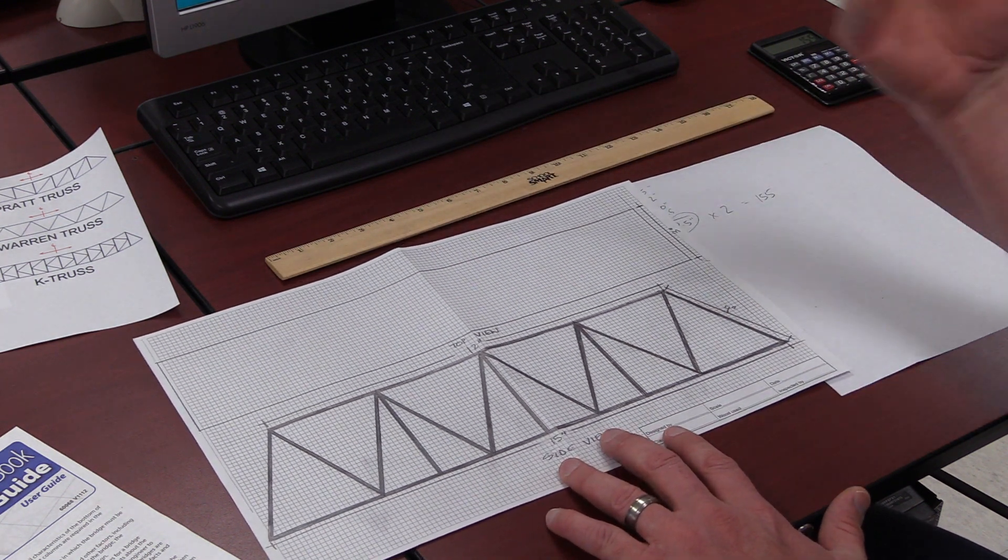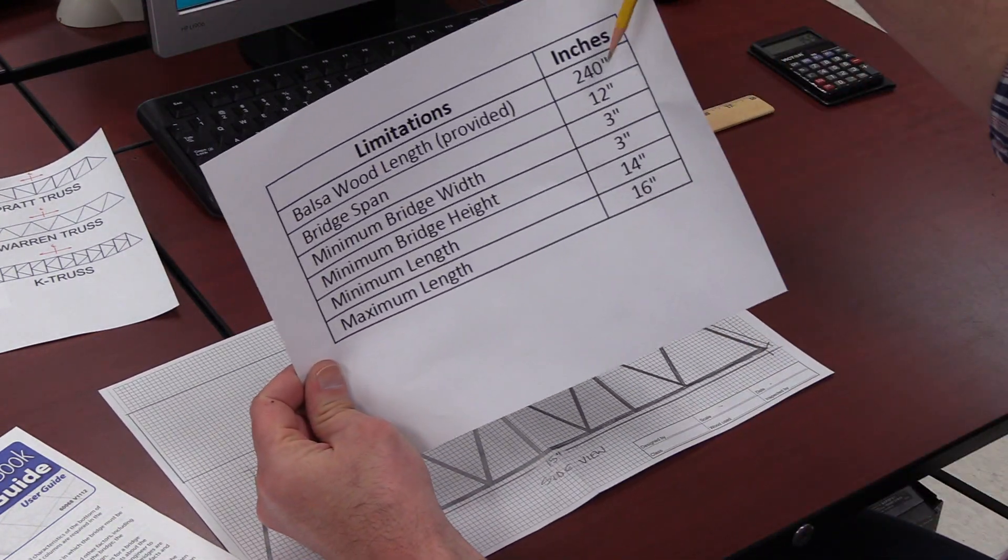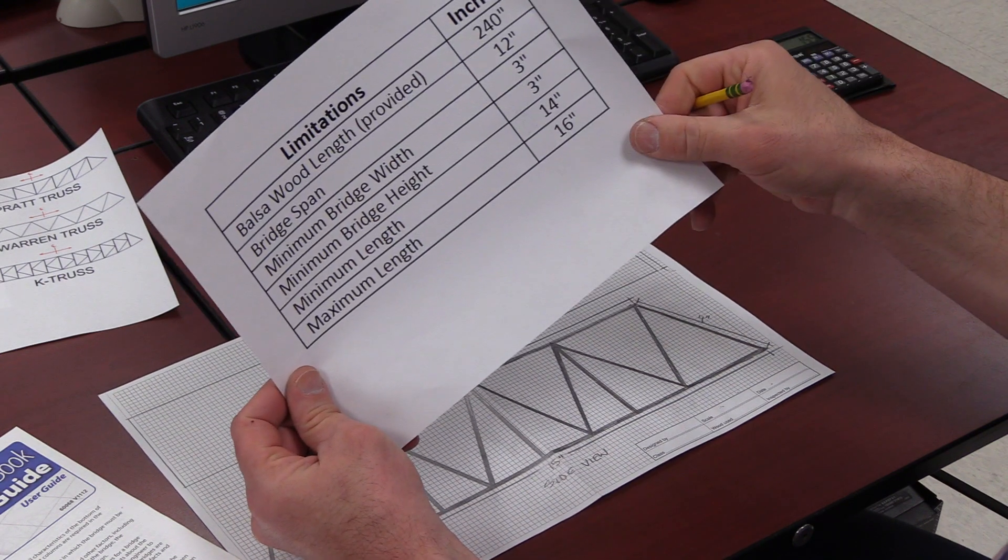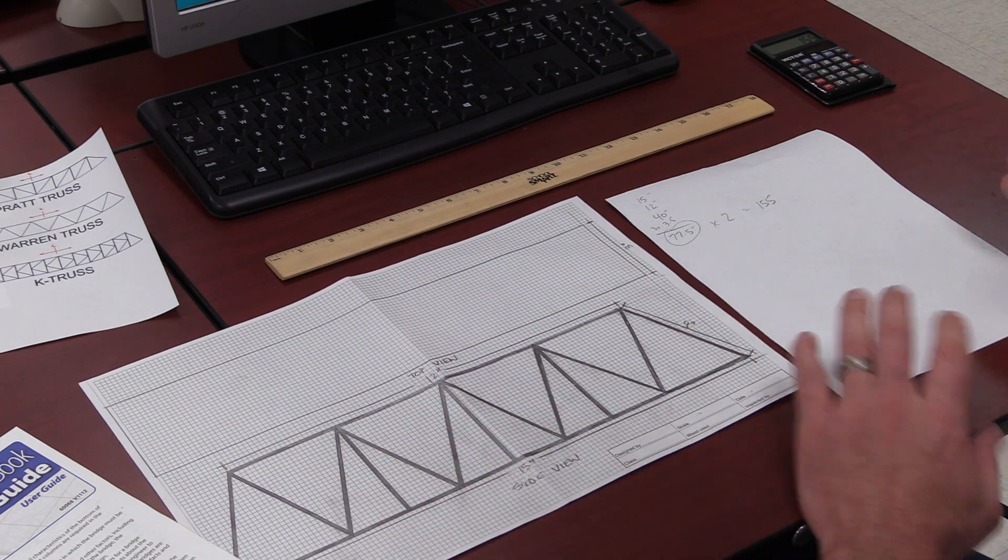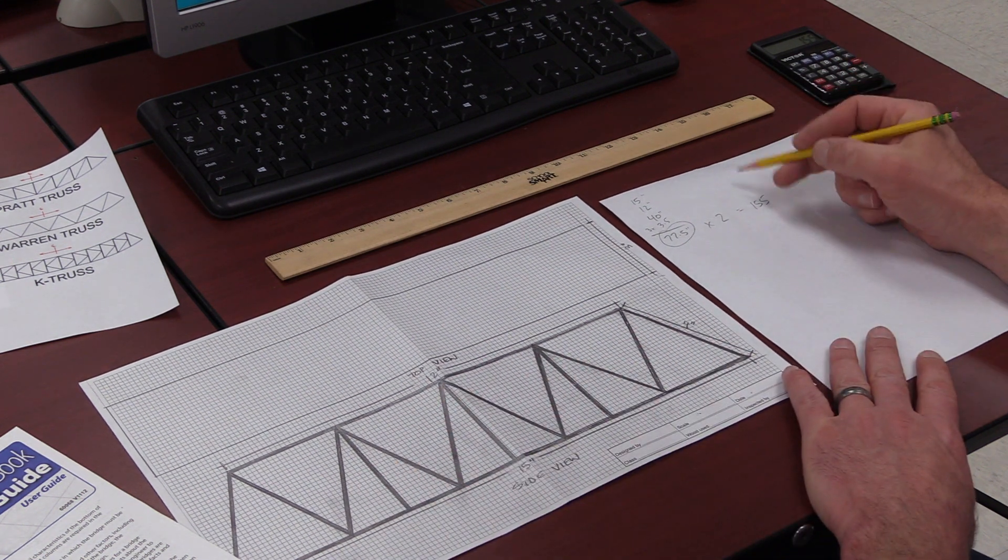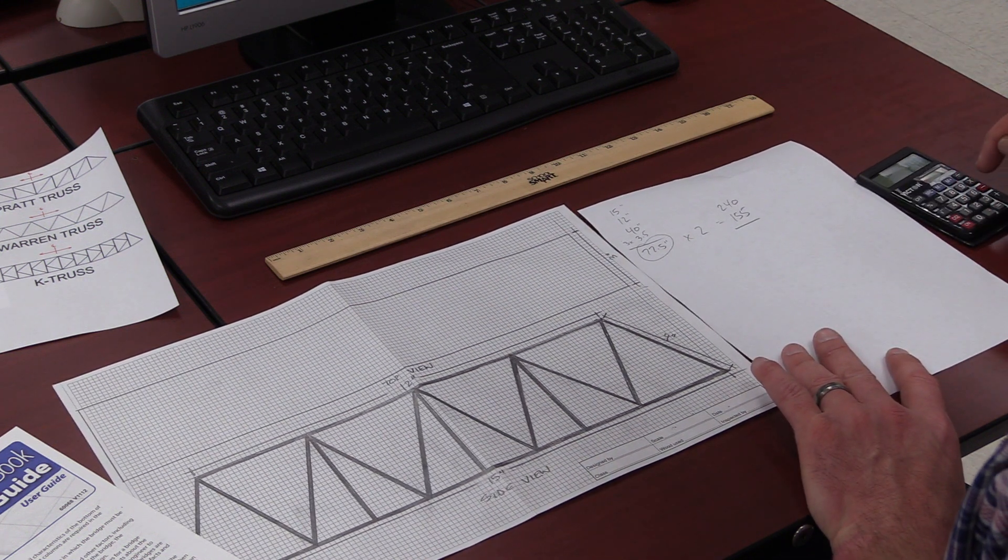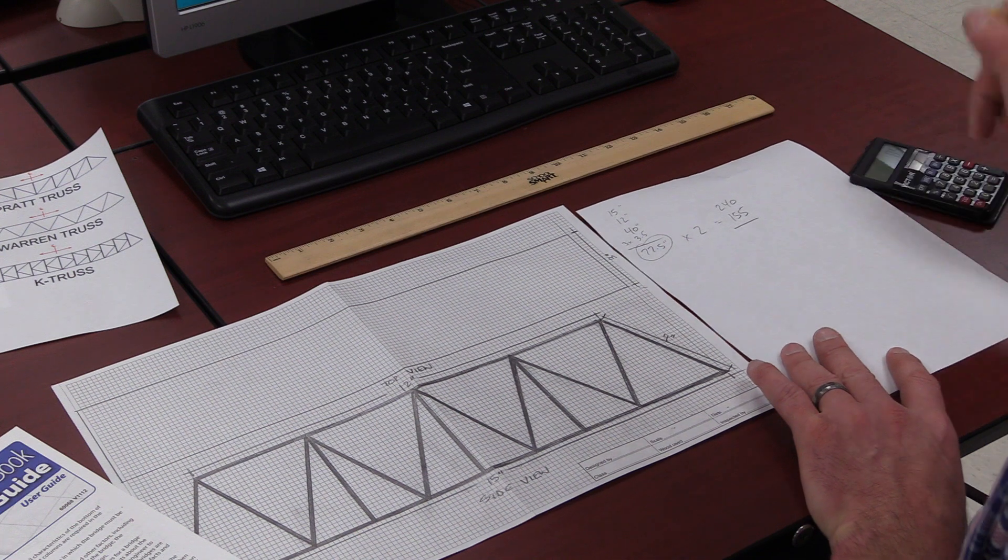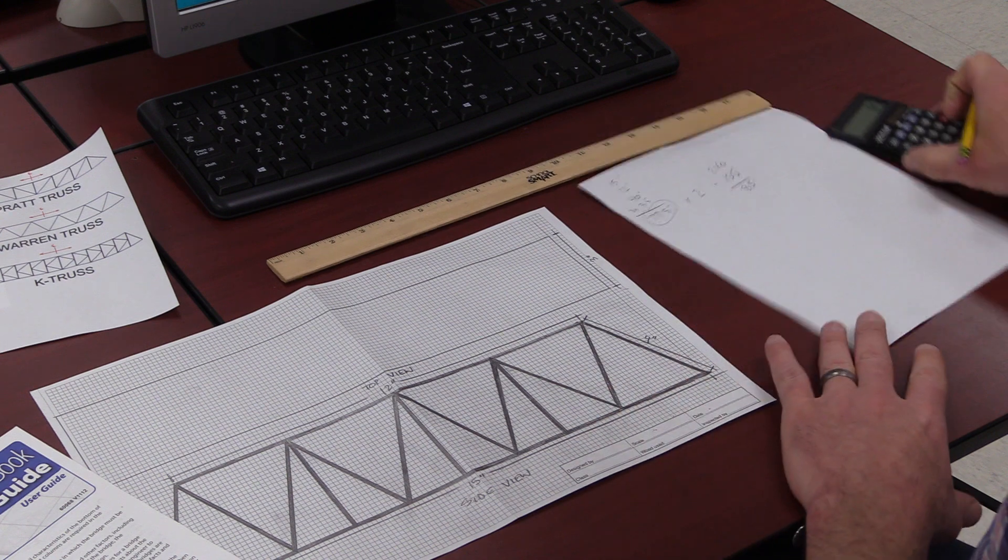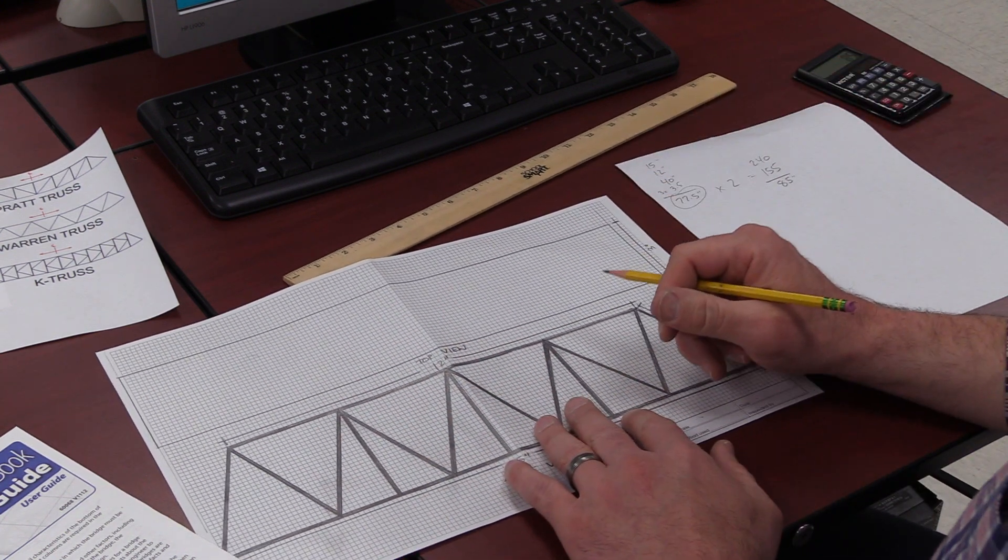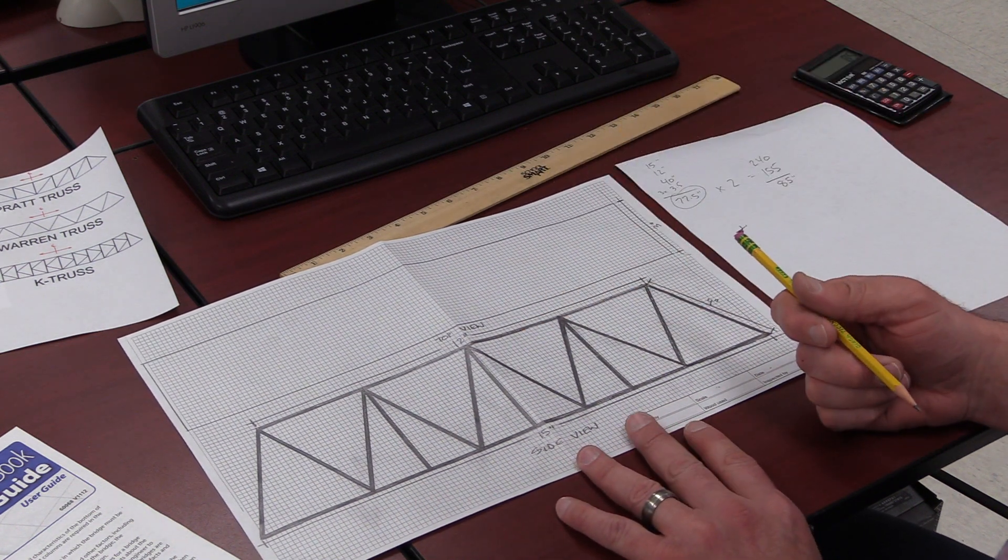So if I start off with 240 inches of balsa wood, I'm going to take that number and subtract what I've totaled for the two trusses and see where that leaves me. That leaves me with 85 inches of balsa wood left. That's somewhat favorable. I could have put a little bit more into my design and I just might even do that.